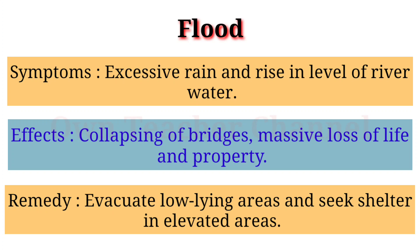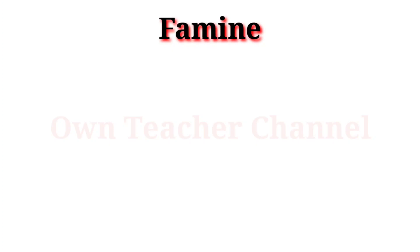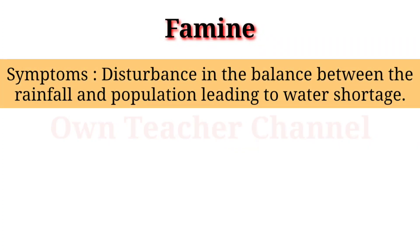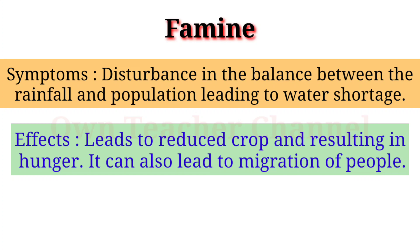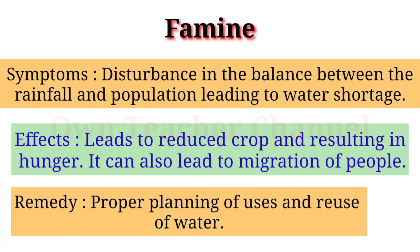Famine — Symptoms: disturbance in the balance between rainfall and population, leading to water shortage. Effects: leads to reduced crop yield, resulting in hunger; it can also lead to migration of people. Remedy: proper planning of use and reuse of water.